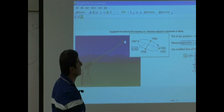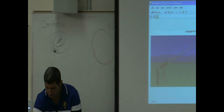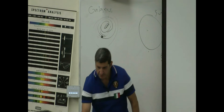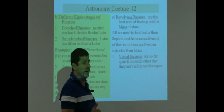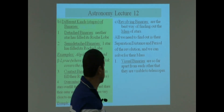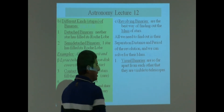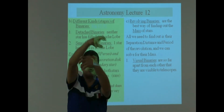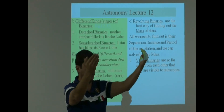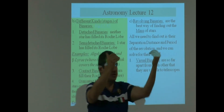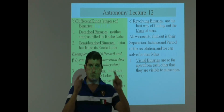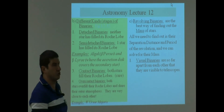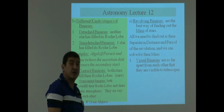So Kepler's third law comes in handy there. Within this category of revolving binaries, there are three major kinds. The first is called a visual binary. That means the two stars are so far apart that when we look through our telescopes, we actually literally see two stars — it's easy to spot them. They are so far apart that they are visible to telescopes, but there aren't too many of these.